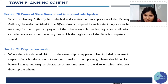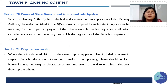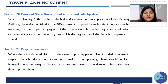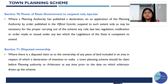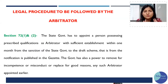Section 70 covers the power of the state government to suspend laws and bylaws — if existing bylaws are there, the state government as a competent authority can suspend some laws or bylaws and introduce or modify new ones. Section 71 covers disputed ownership — whatever dispute exists regarding ownership of land must be resolved before the arbitrator. The appointment of an arbitrator is the most important provision under Section 72.